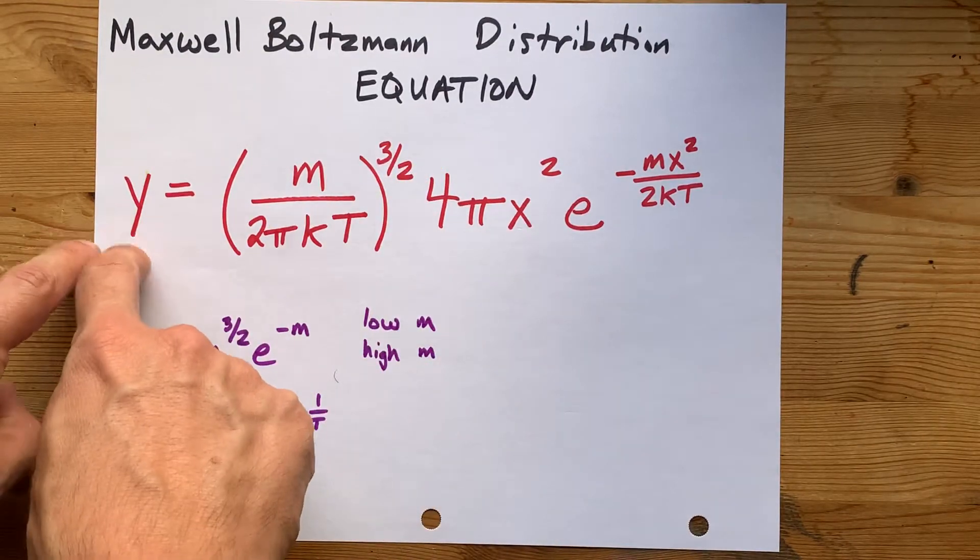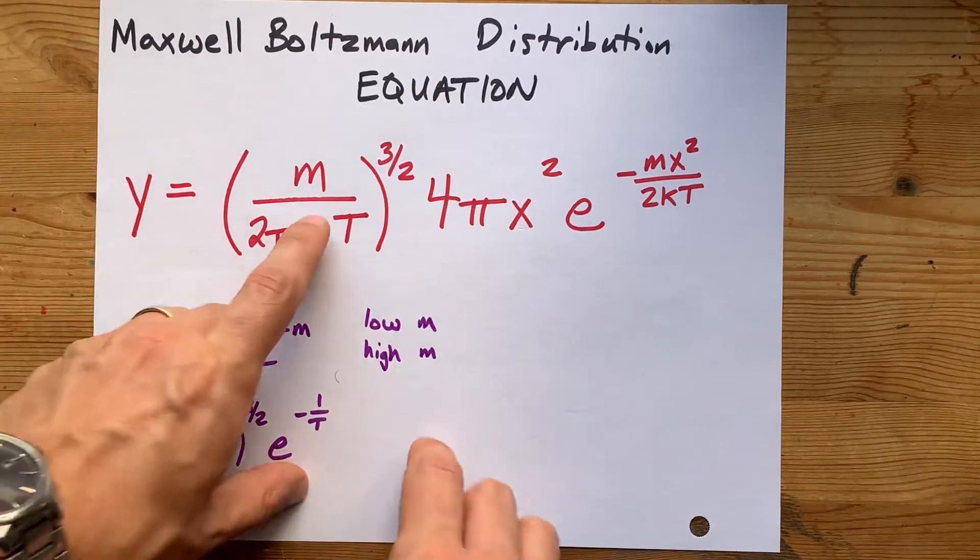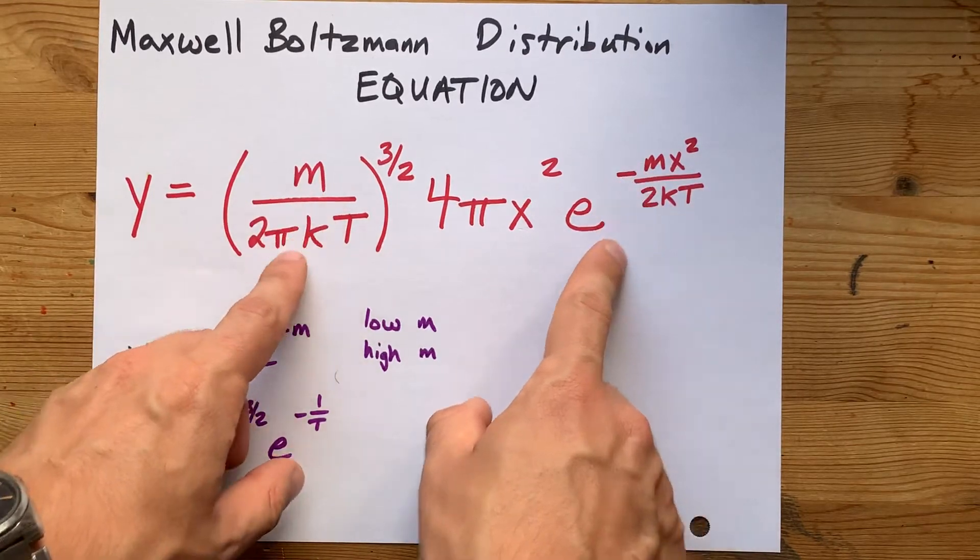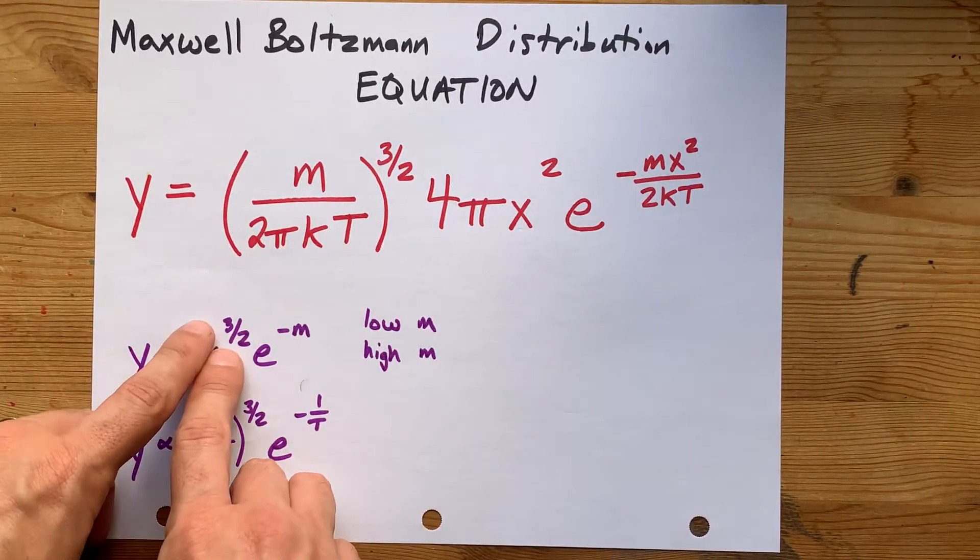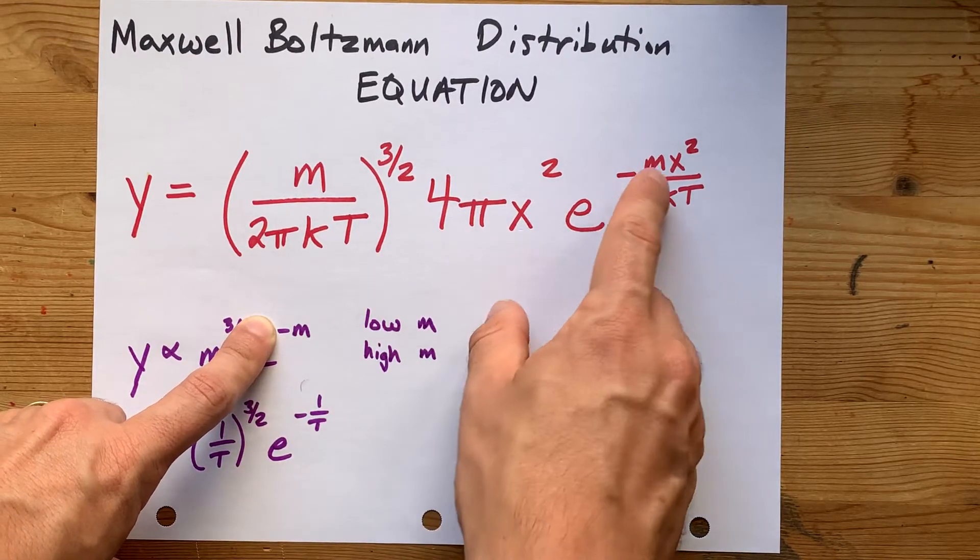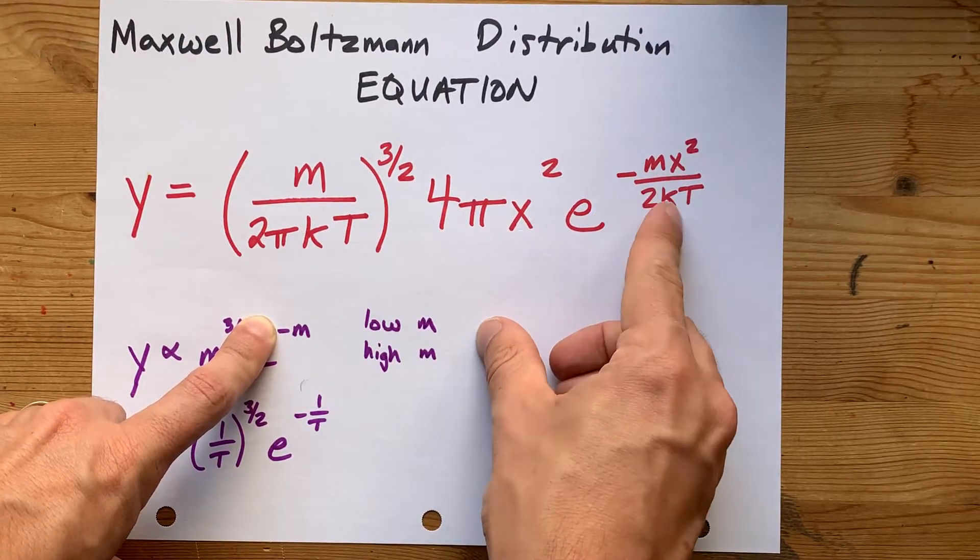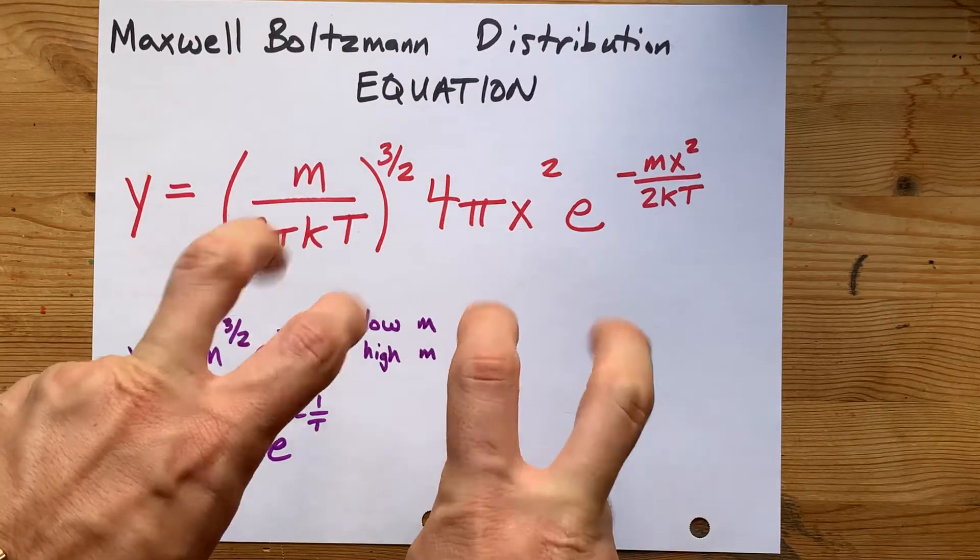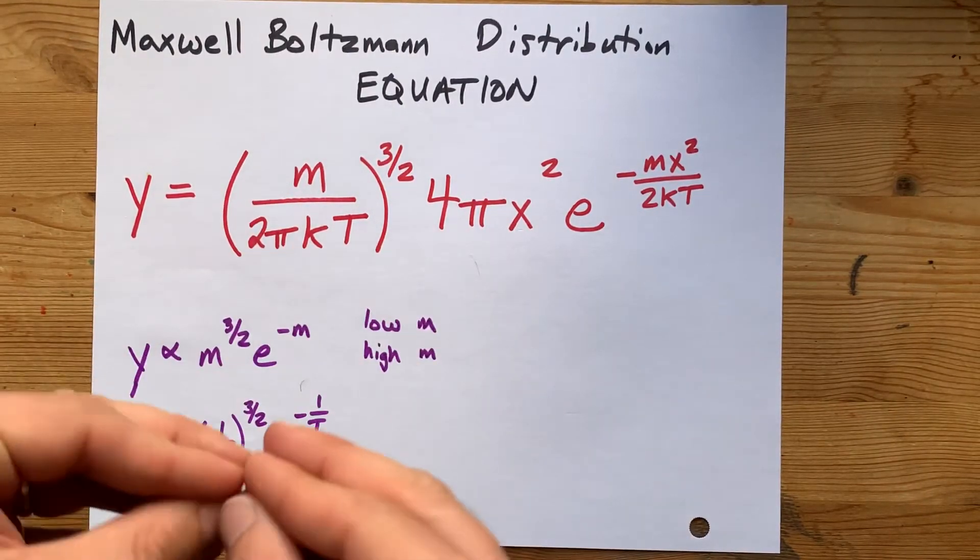So how is the probability affected by these M's? Well, the places where the M's are are M to the power of three halves and E to the power of negative M. Again, X squared over 2KT. All of that's staying constant if we're only talking about molecular mass.